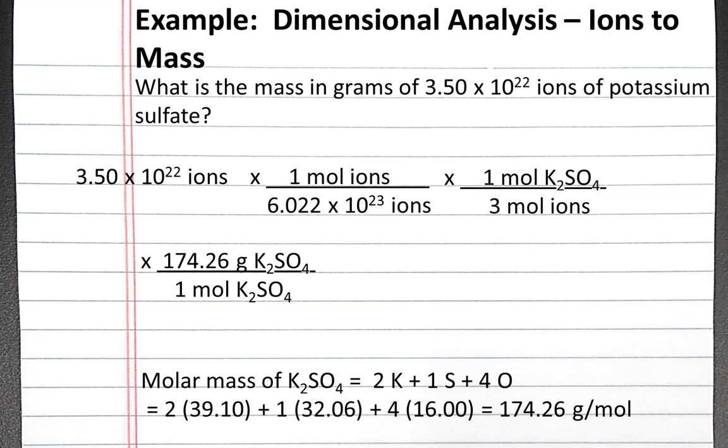Now our units should cancel so that we end with grams of potassium sulfate. If you put this into your calculator, you should get 3.38 grams of potassium sulfate.